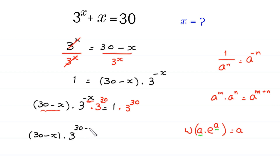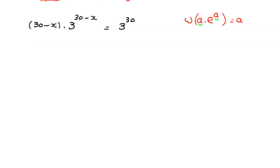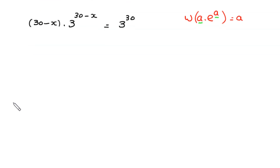We can write this as: 30 minus x times 3 to the power 30 minus x is equal to 1 times 3 to the power 30. Now we have the same expression 30 minus x in both places.